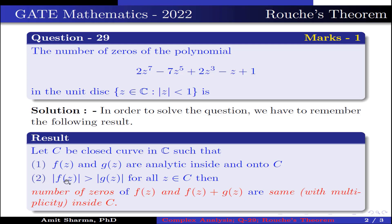Point 2: |f(z)| > |g(z)| for all z belongs to C. Then the number of zeros of f(z) and f(z) + g(z) are the same with multiplicity inside C.